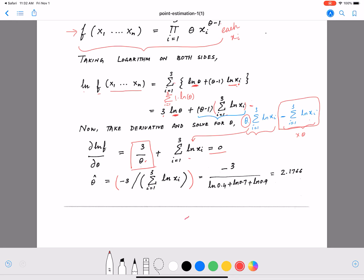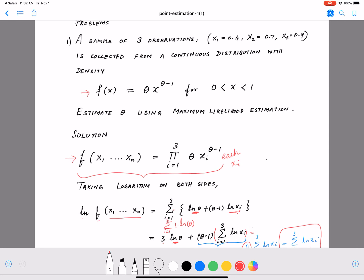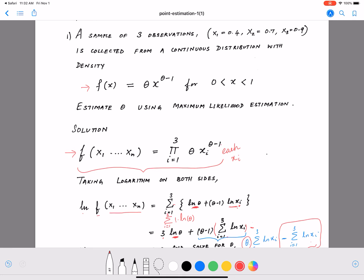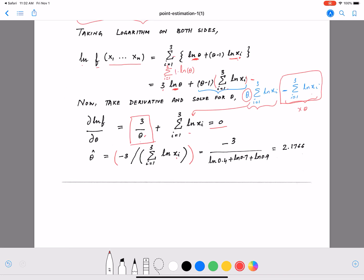Now we know the individual values of xi. We are given those values. Let's go up just to remind us what the values are: 0.4, 0.7, and 0.9. We know three values, so we are going to substitute those values here for xi, which gives us minus 3 by ln 0.4 plus ln 0.7 plus ln 0.9. ln is log to the base e.